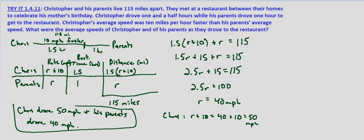Now how do we check this? Well, let's make sure that the distance is the same when we add them up using the solutions that we found. For Chris we have 1.5 hours times - we found Chris was going 50 miles per hour - so 1.5 hours times 50 miles per hour plus 1 hour times 40 miles per hour. Does that equal 115?